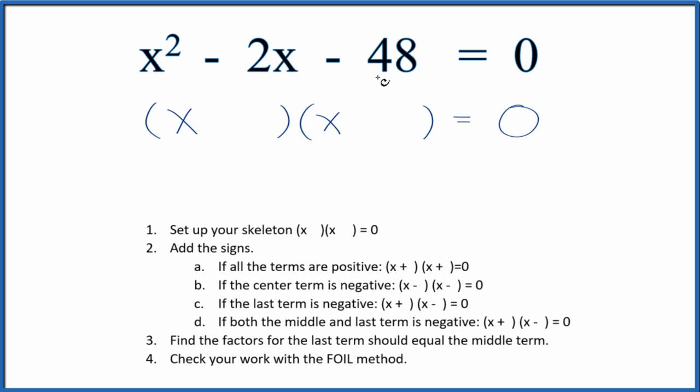You could also use the quadratic formula and get the same answer. Let's start with these rules. We set up our skeleton, now we add the signs. Since the middle term and last term are negative, we put a plus and a minus. That'll help us out.